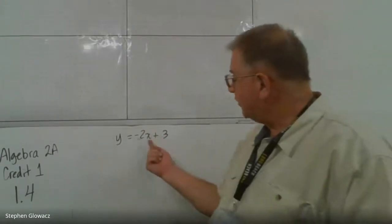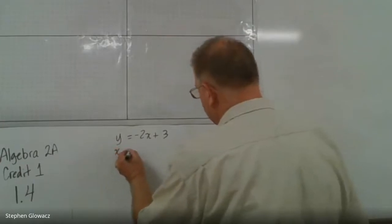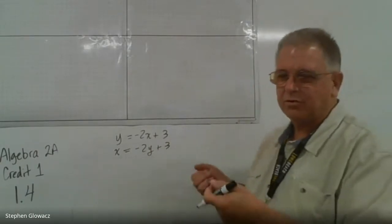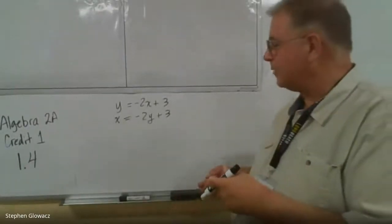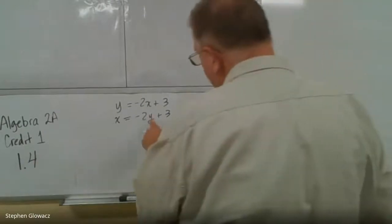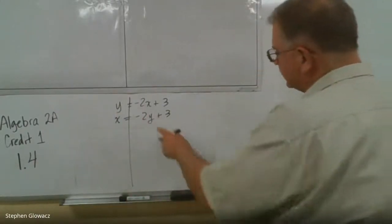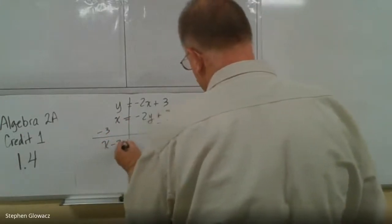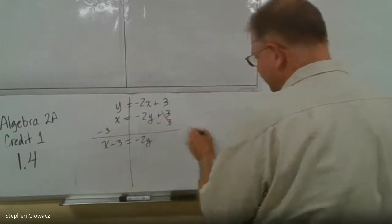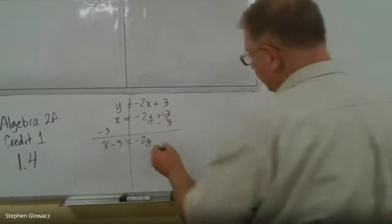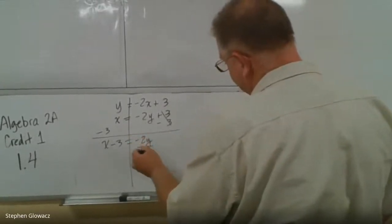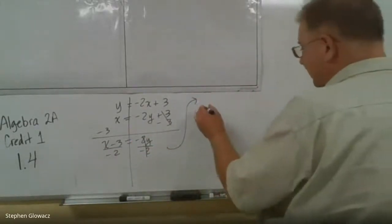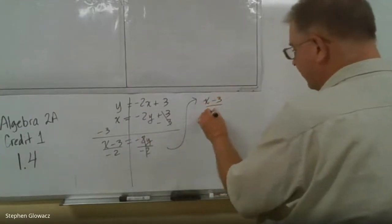Next, we switch the x and the y. So x comes to one side, y goes to the other, and then we solve for y. We need to get rid of that 3, so we subtract 3 from both sides. We get x minus 3 on one side and -2y on the other — the 3s cancel. Then to get y by itself, since y is multiplied by -2, we divide by -2. We get: x minus 3 over negative 2 equals y.